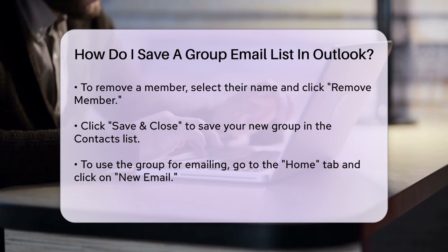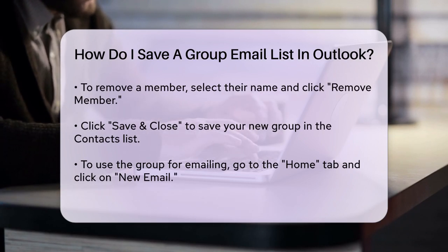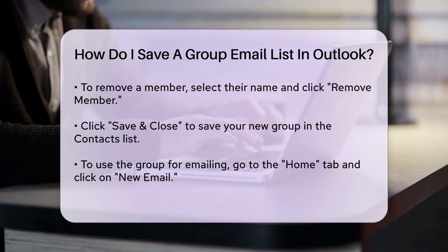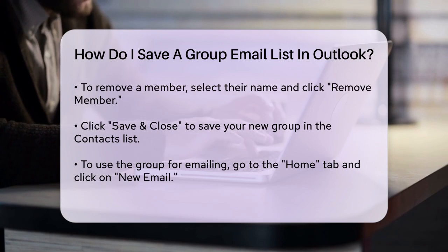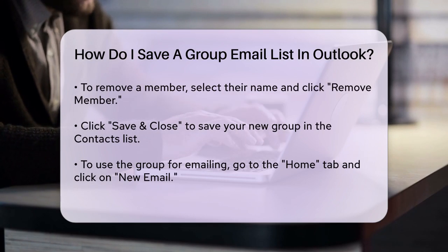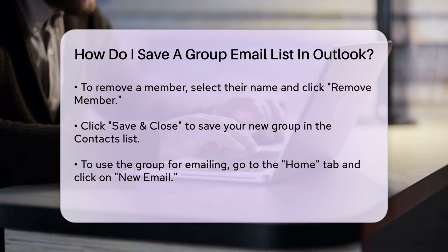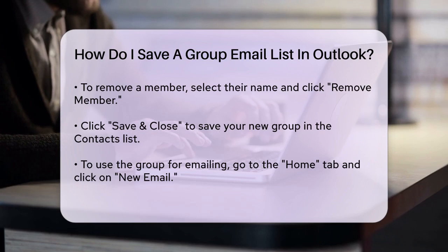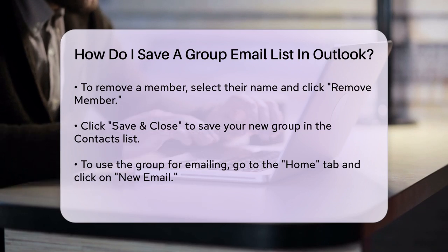To use this group when sending an email, go to the Home tab, click on New Email, and in the To field, type the name of your contact group. Double-click the group name to add it to the To box, and you're ready to send your email.